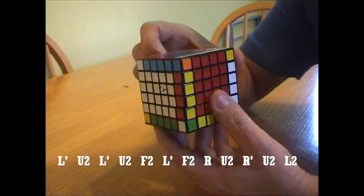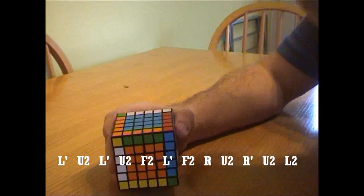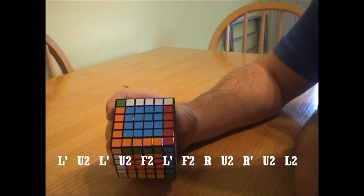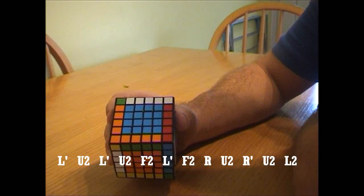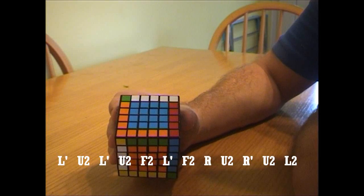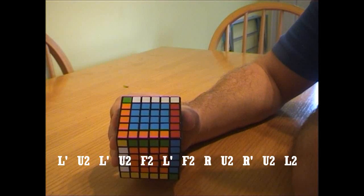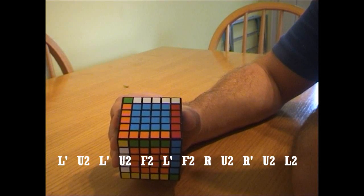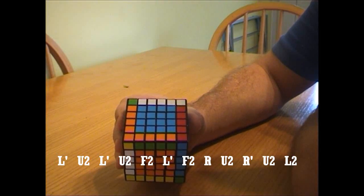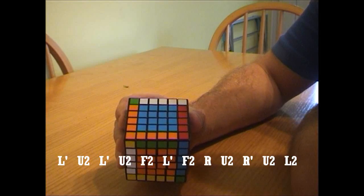So it's going to be left side anti-clockwise 90 degrees, up face 180 degrees, left face anti-clockwise 90 degrees, up face 180 degrees, front face 180 degrees, left face anti-clockwise 90 degrees, front face 180 degrees, right face clockwise 90 degrees, up face 180 degrees, right face anti-clockwise 90 degrees, up face 180 degrees, and left face 180 degrees.